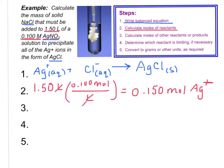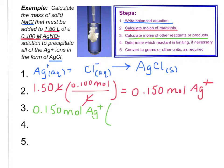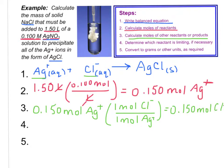Next, we want to find the number of chloride ions that are required — that's our next step: calculate the moles of either the other reactant or the products. In this problem, we're wanting to know how many chloride ions are going to need to react with the silver ions. We have 0.150 moles of silver, and the mole-to-mole ratio here is one to one — one mole of chloride ion to one mole of silver ion. So that gives us 0.150 moles of the chloride ion.